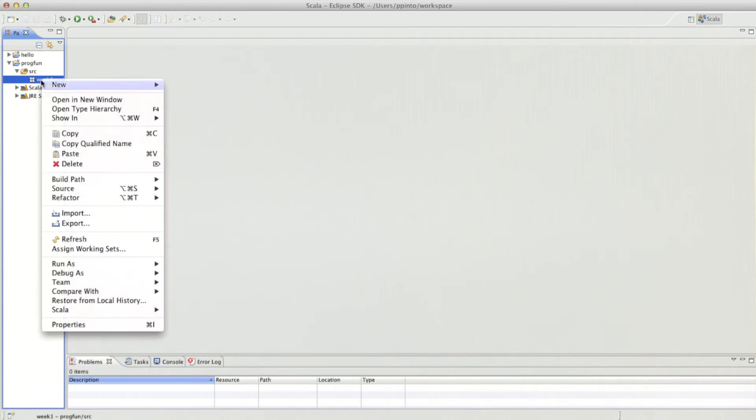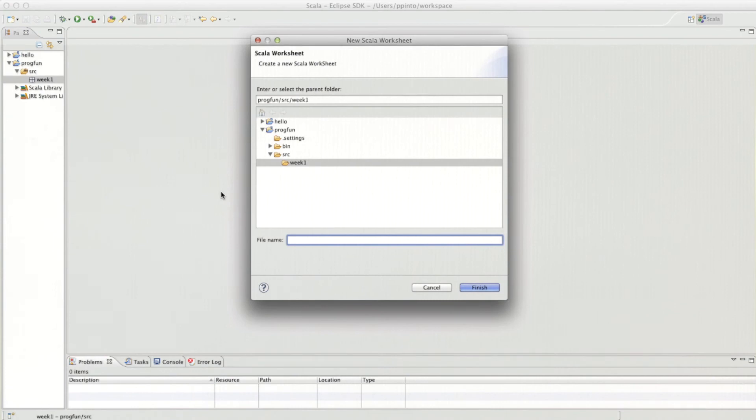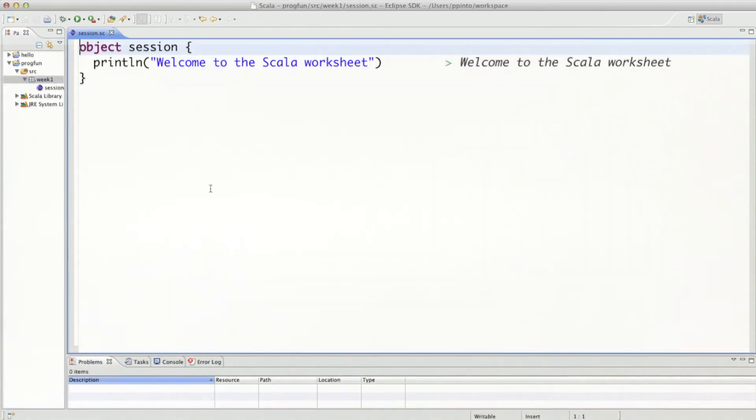And then in that package, we define a new worksheet. It needs a name. Let's call it session. In a worksheet, what we can do is we can type expressions and have them evaluated just like in a REPL. So we can do one plus two. And expressions get re-evaluated when we hit save. That would be command S or control S. But the expressions show up on the right in a different column that you see here.